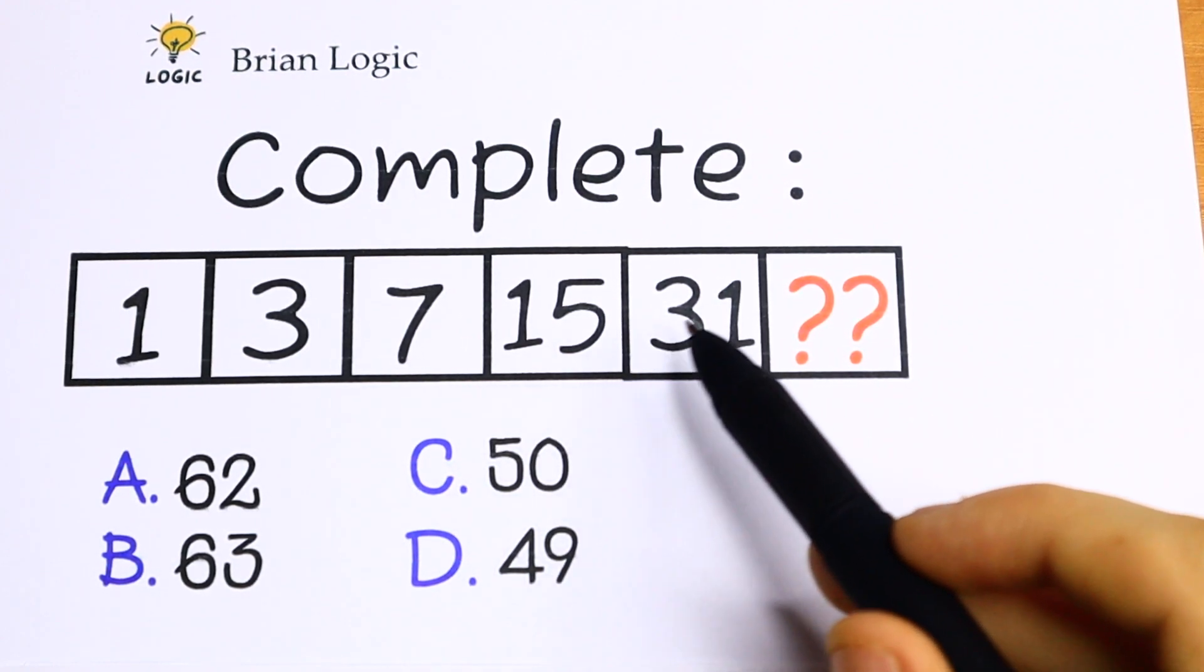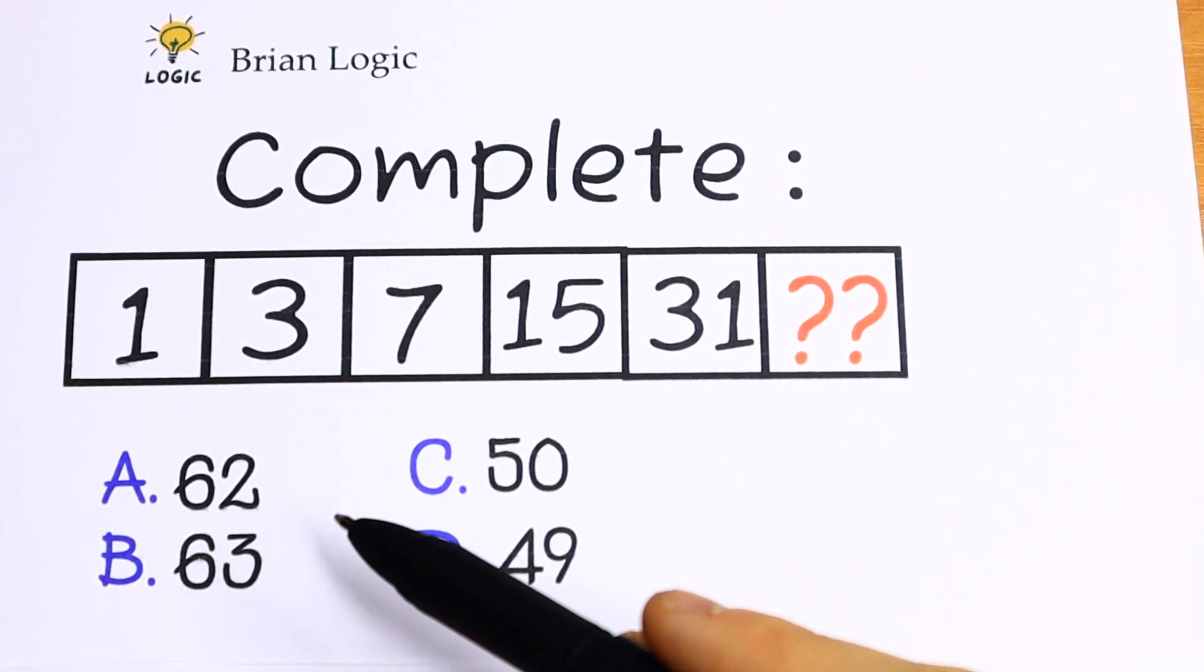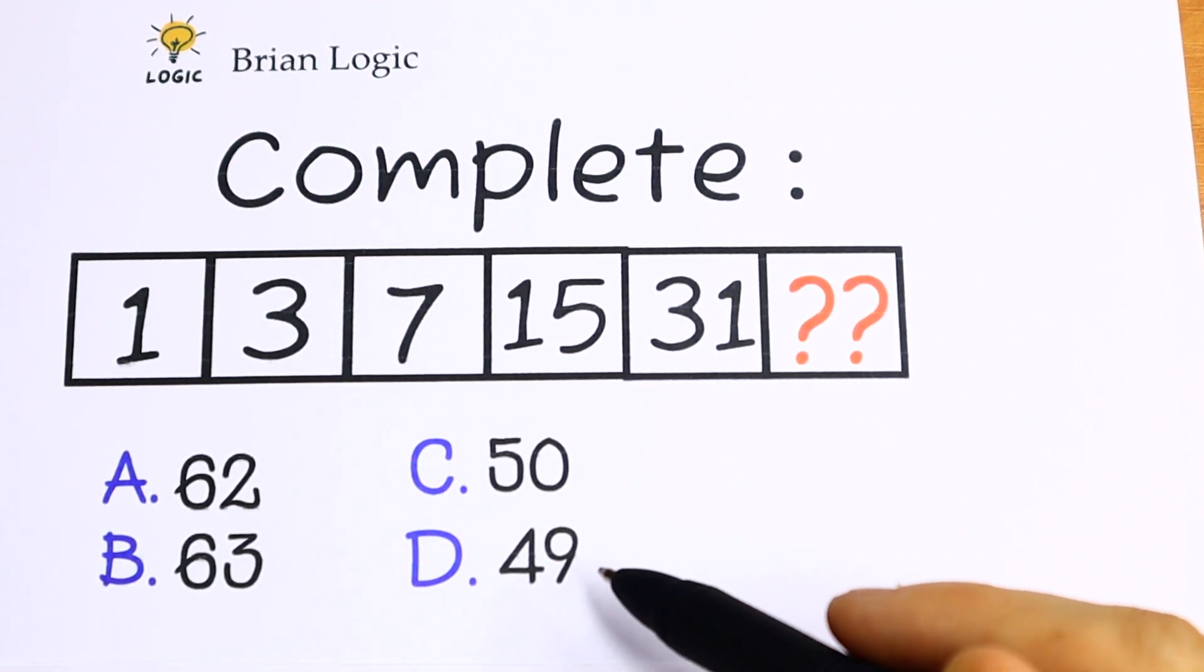We have 1, 3, 7, 15, 31 and we need to find the last one. Here we have the options: 62, 63, 50, and 49.